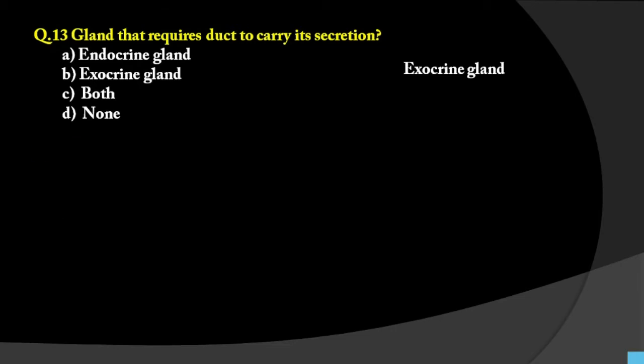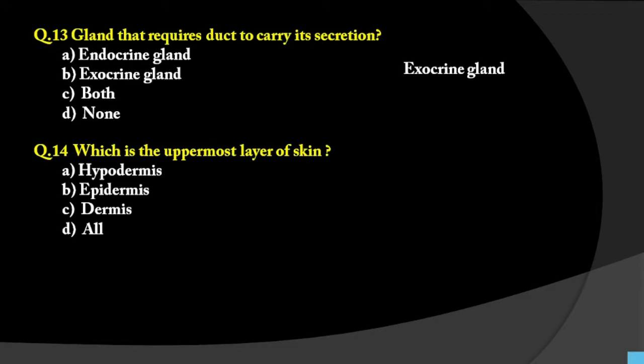Question number 14: Which is the uppermost layer of the skin? Options are epidermis, dermis, and others. The prefix 'epi' means upper and 'hypo' means lower. Since the uppermost layer is asked, the answer is epidermis.